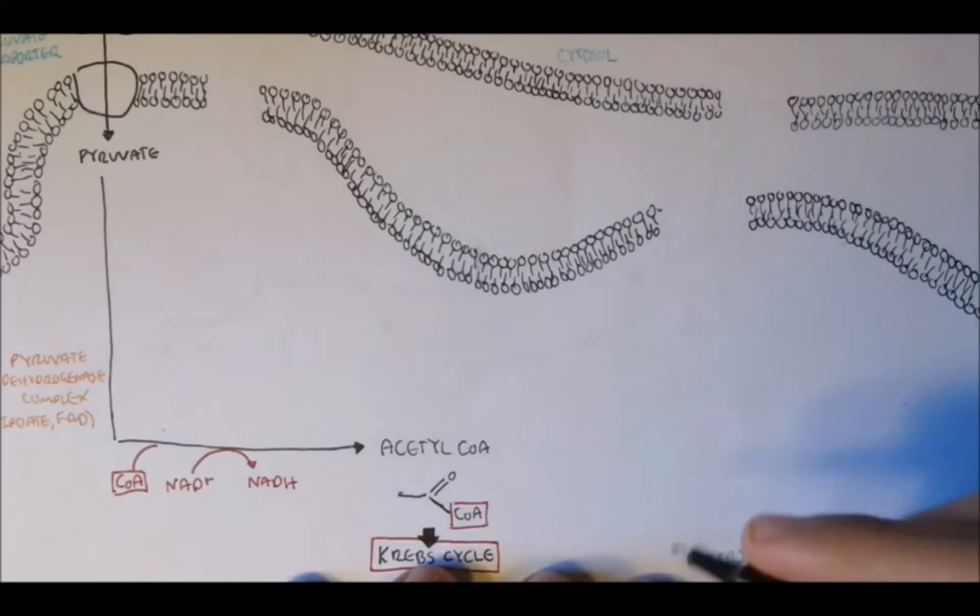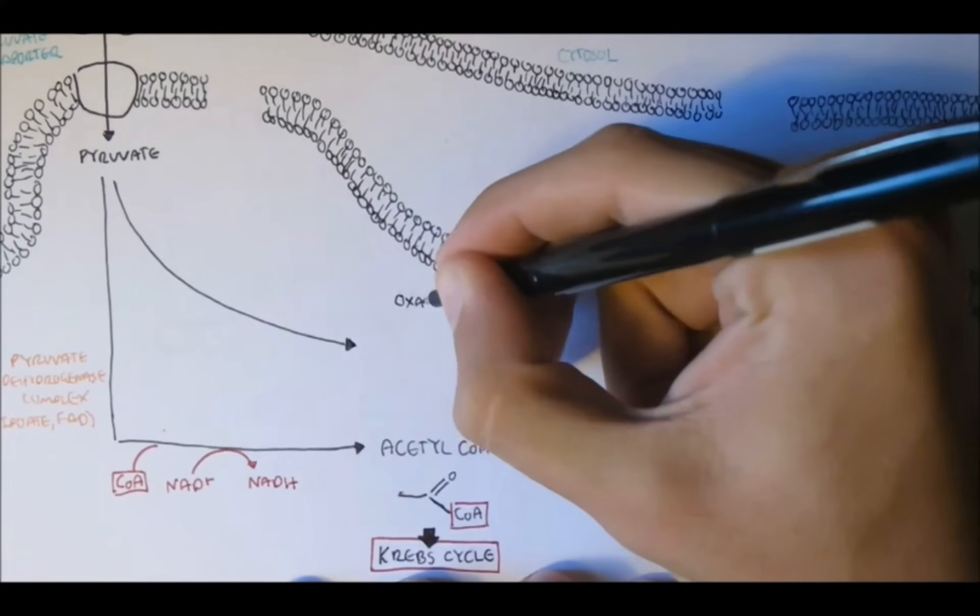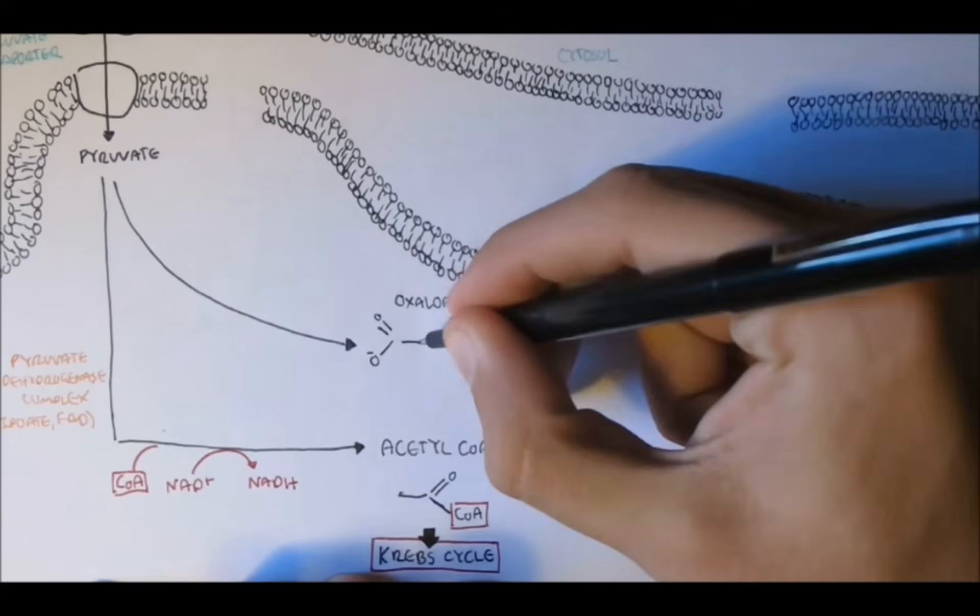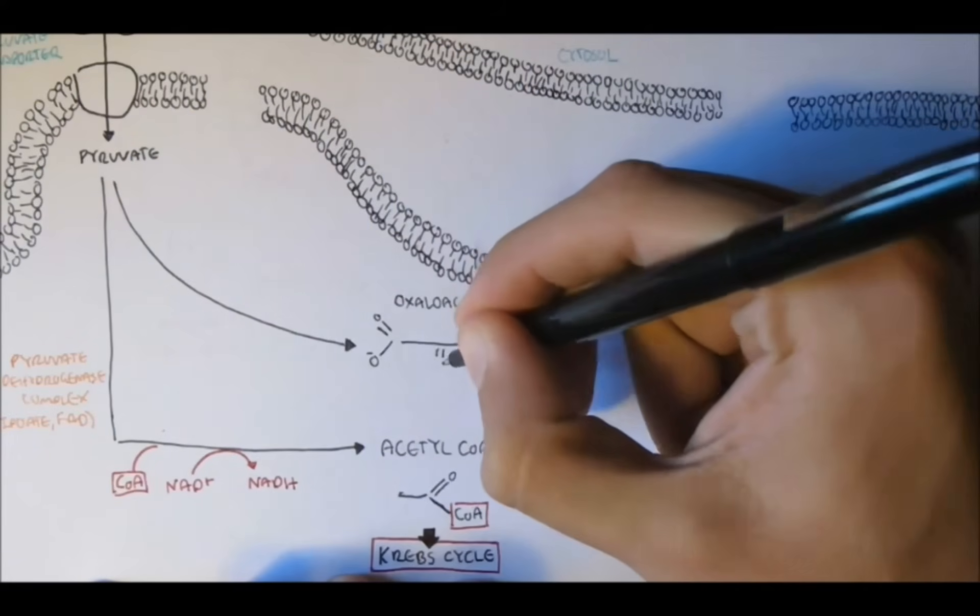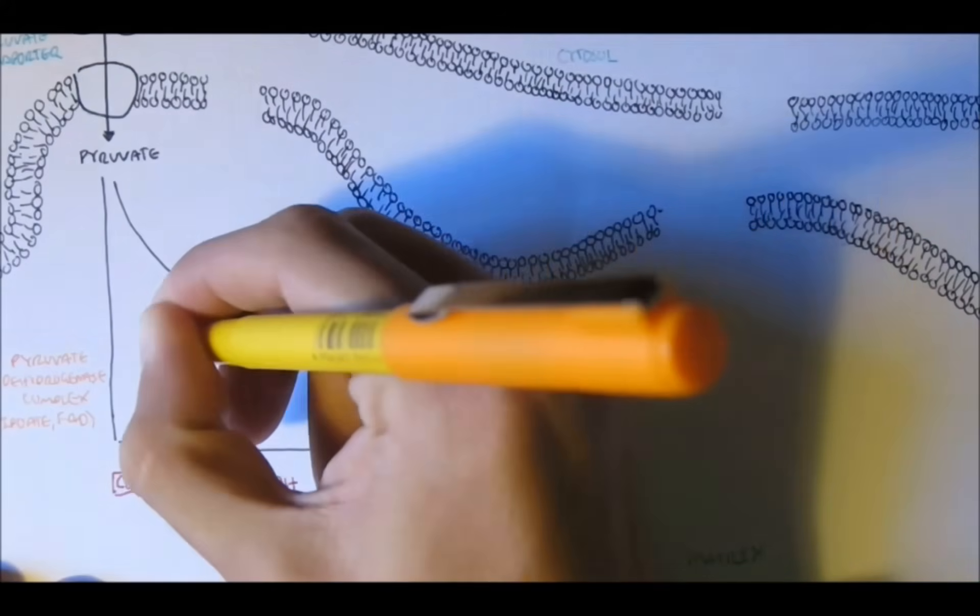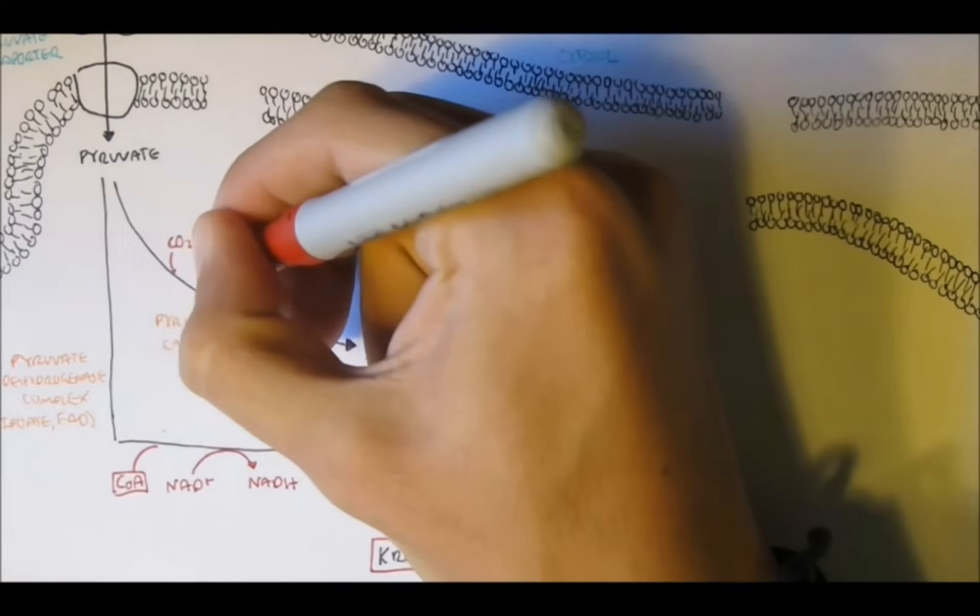So, how does it get from the matrix into the cytosol? If we start from pyruvate in the mitochondria, it can convert to oxaloacetate. And this is by the enzyme pyruvate carboxylase, where a carbon dioxide group is added to the pyruvate by ATP.